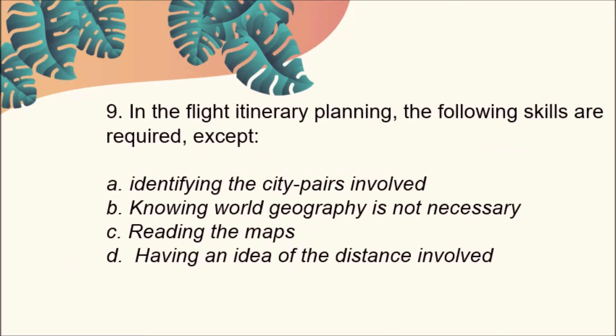Number nine: In the flight itinerary planning, the following skills are required except one. A, identifying the city pairs involved; B, knowing world geography is not necessary; C, reading the maps; D, having an idea of the distance involved. The answer is Letter B — knowing world geography is very necessary.